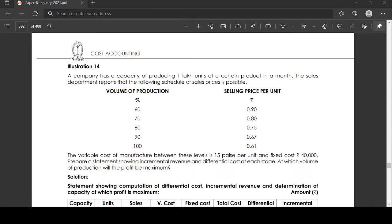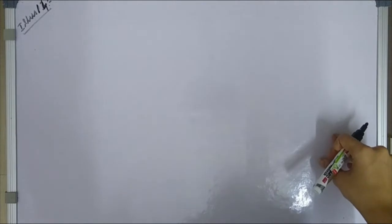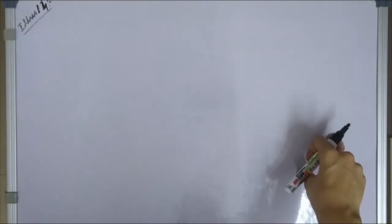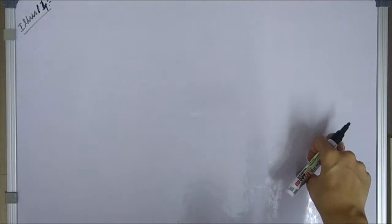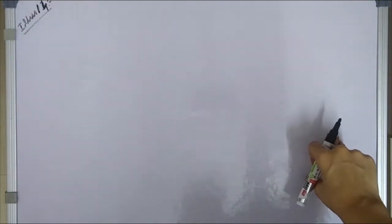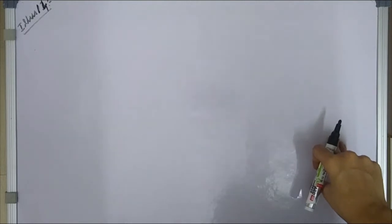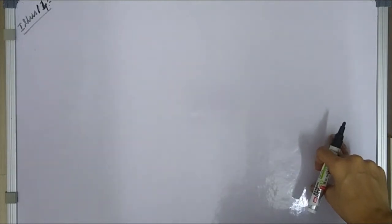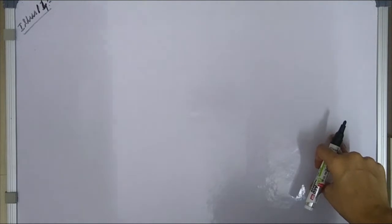At which volume of production will the profit be maximum? So in this illustration, there are 1 lakh units to produce a certain product in a month. The volume of production from 60% to 100% is given, along with the selling price per unit. The variable cost is 0.15 per unit and fixed cost is 40,000.